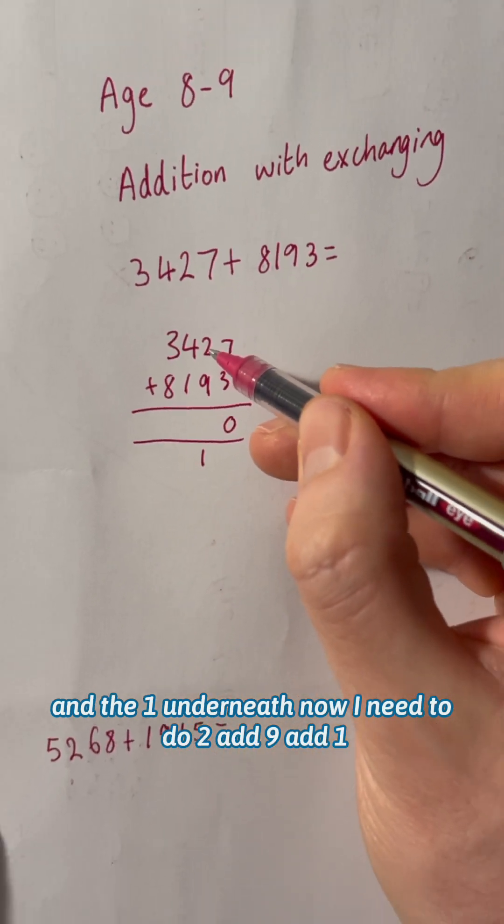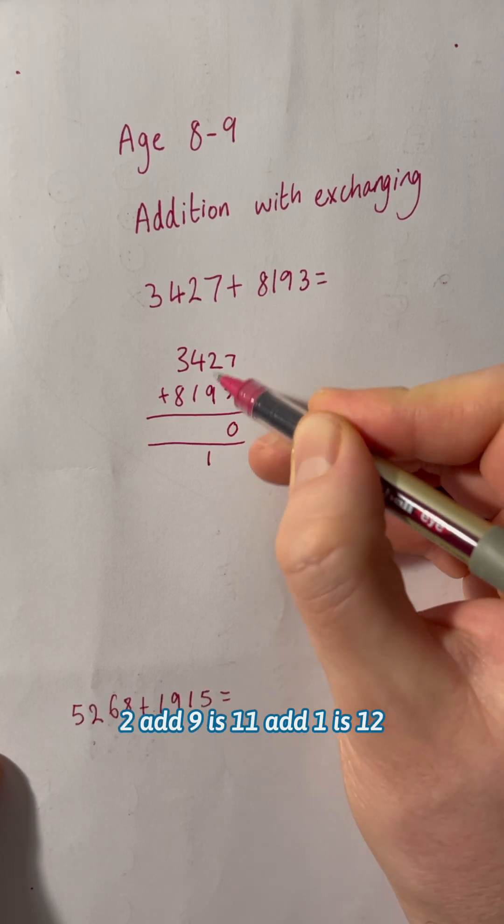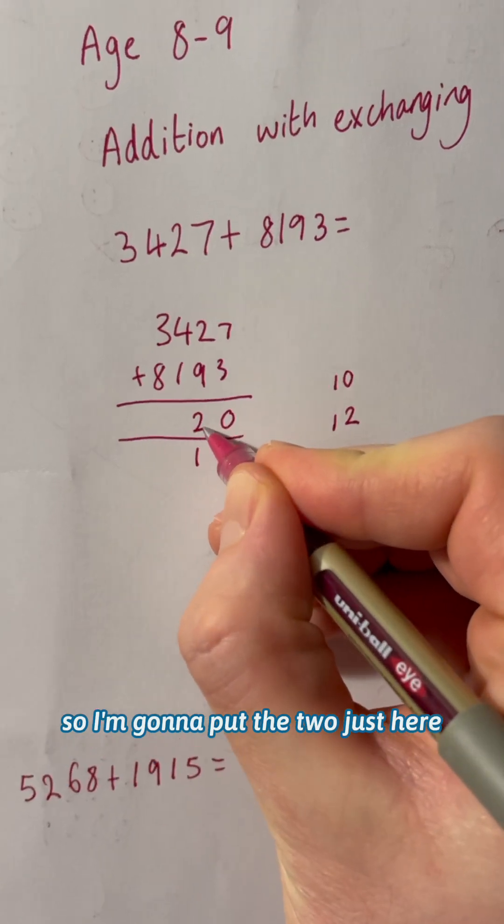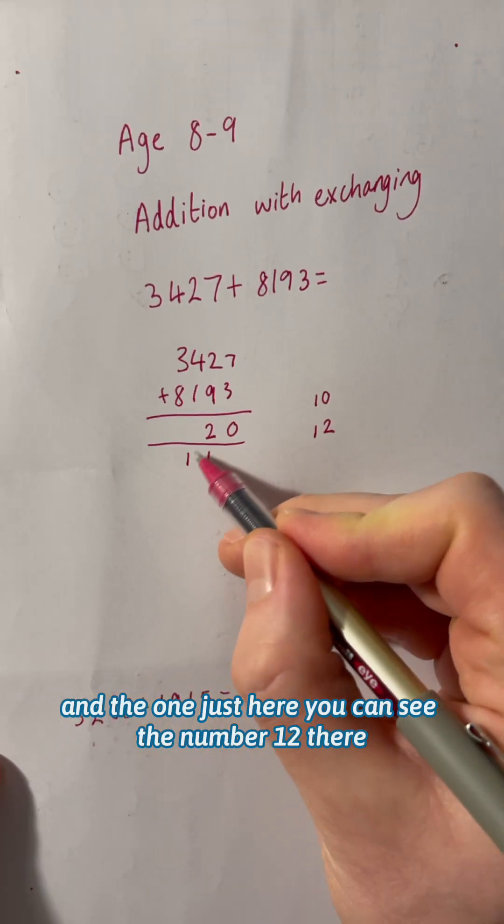Now I need to do two, add nine, add one. Two add nine is 11, add one is 12. So I'm going to put the two just here and the one just here. You can see the number 12 there.